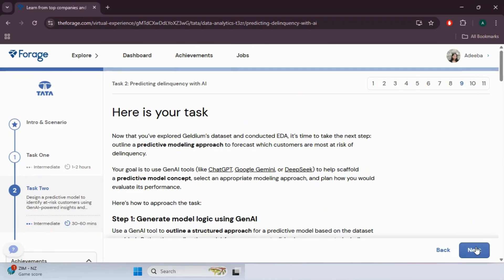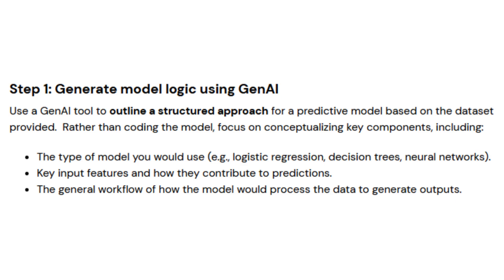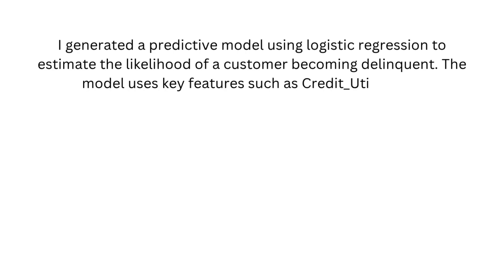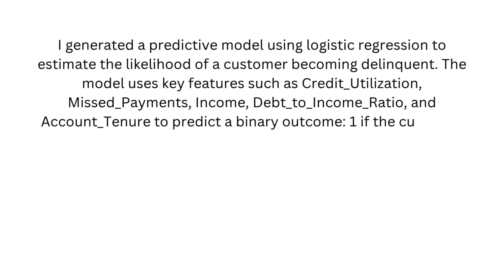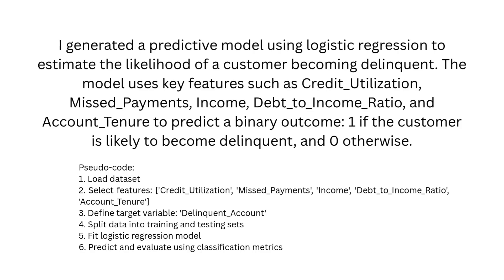Now for the task — I will guide the answers step by step. For step one, using a Gen AI tool like ChatGPT, we outline a structured approach for a predictive model, identify key features and how they contribute to predictions, and generate sample code for building a credit risk prediction model. The solution uses logistic regression to estimate the likelihood of a customer becoming delinquent, using features such as credit utilization, missed payments, income, debt-to-income ratio, and account tenure to predict a binary outcome: one if likely delinquent, zero otherwise.